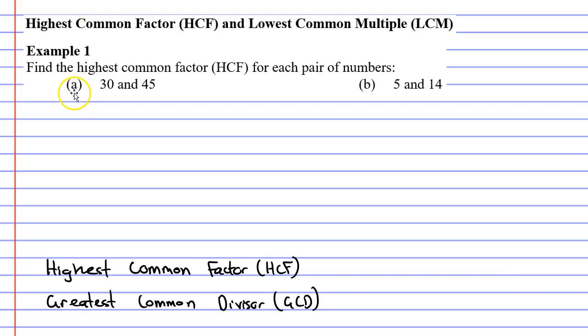So for question A we have the two numbers 30 and 45 and we want to find the highest common factor. So what we'll do is we'll start by finding the factors. What are the factors of 30 and what are the factors of 45?